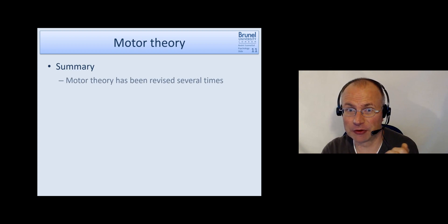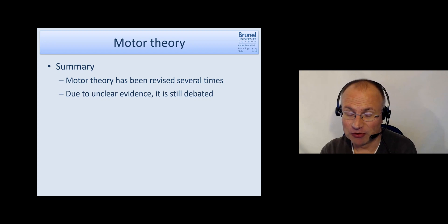So when we want to summarize the motor theory, it has been revised several times to account for these problems, but certain problems still remain. And so it's still debated in a sense. And I think what we can say is that the motor theory has some limits. And the motor cortices seem to play a role, but it is unclear how strong this role is, how necessary is the information really for speech perception.